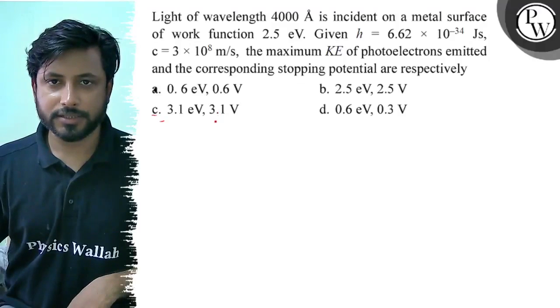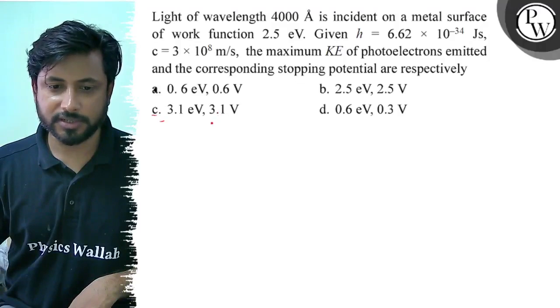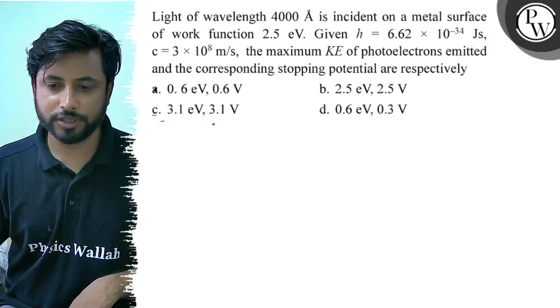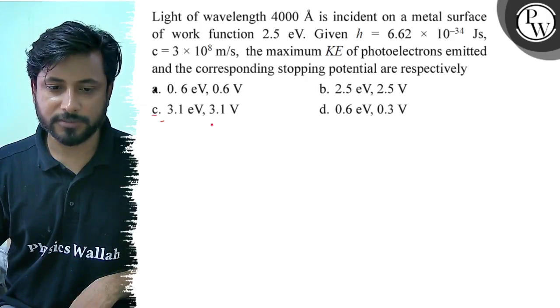Hello students, let us see this question. Light of wavelength 4000 angstrom is incident on a metal surface of work function 2.5 electron volts. Given h equals 6.62 into 10 to the power minus 34 joule seconds, c equals 3 into 10 to the power 8 meter per second. The maximum kinetic energy of photoelectrons emitted and corresponding stopping potential are respectively...